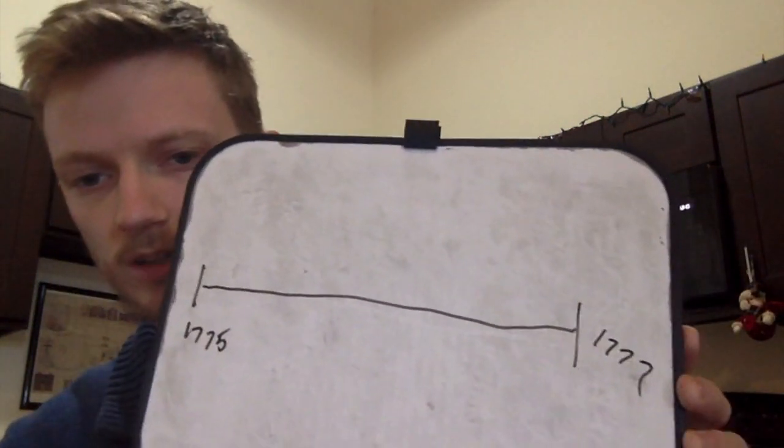To kick this off, I'm going to ask you guys to give me a key event that happened in that period of 1775 to 1777. So here on this timeline, I'm going to draw 1775, go all the way down, and then end it at 1777. So here's my little timeline.